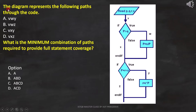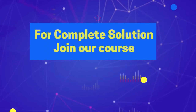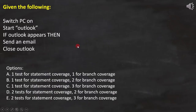Here the question is: the diagram represents the following paths through the code. What is the minimum combination of paths required to provide full statement coverage? Here the flowchart is already given, and in this flowchart the paths are marked as V, X, Z, W, and Y. And A, B, C, and D represent different path combinations. As per the question, we have to find out with which combination all statements are covered, and then these options are provided.